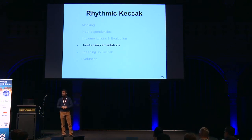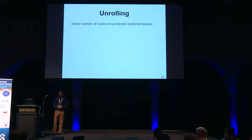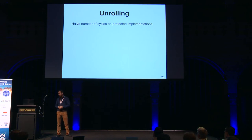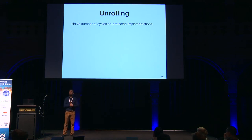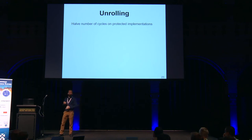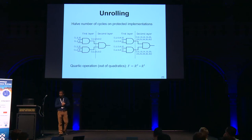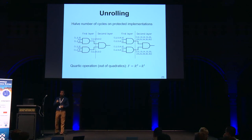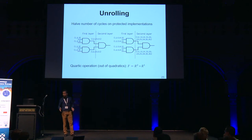Now I'll continue with the second part of my talk: the methodology for securing unrolled implementations. Our aim is to halve the number of cycles in our implementation. To do that, we need to avoid registers. Since DOM requires registers to handle input dependencies, we will now use TI to successfully achieve this. To illustrate the methodology, consider a quartic operation — a four-input AND gate. We split it into two layers of quadratic operations, which we know better how to secure.